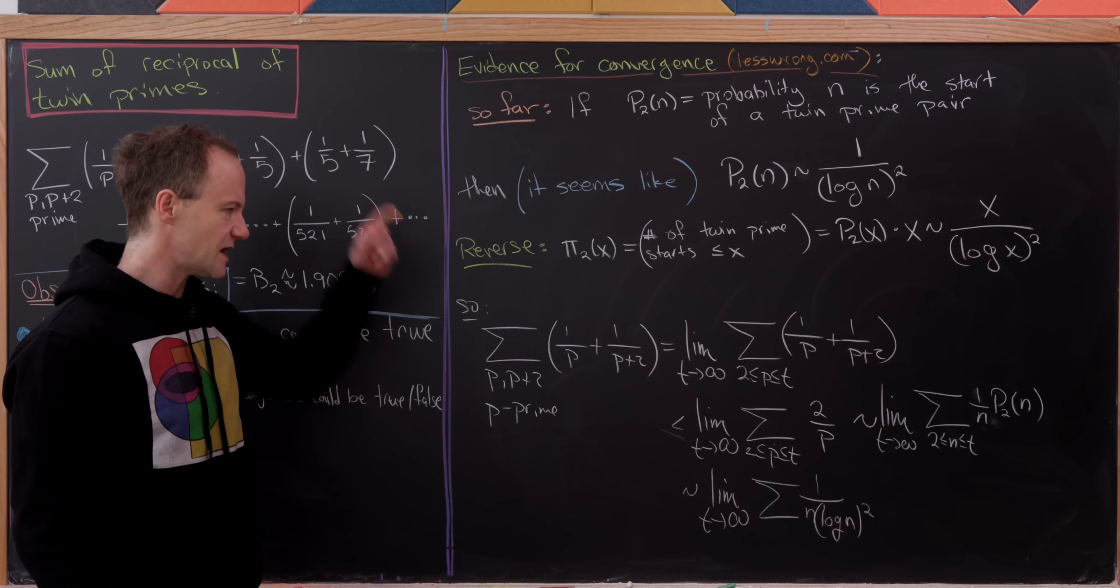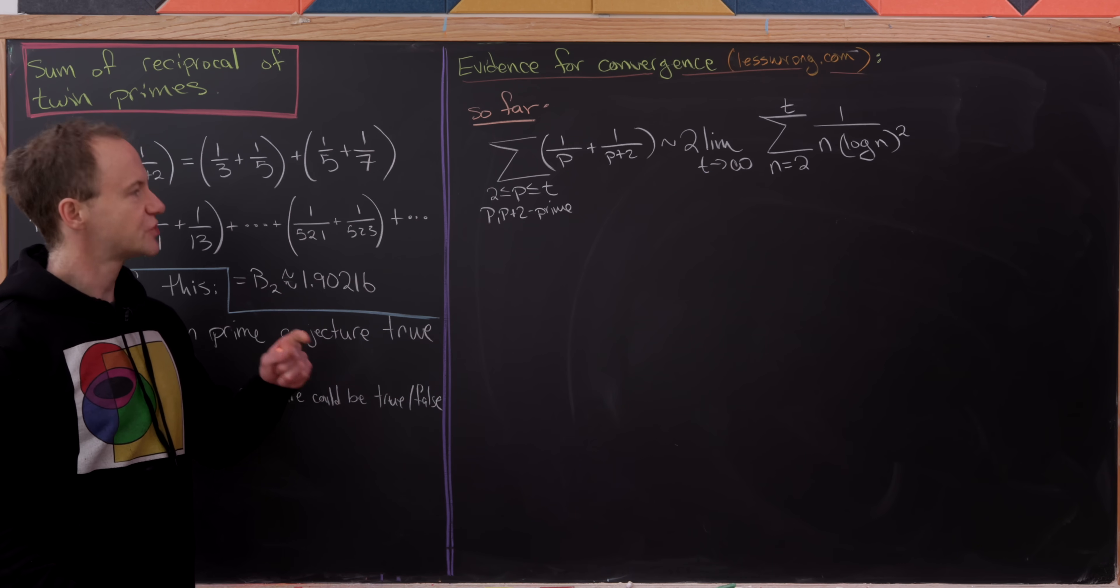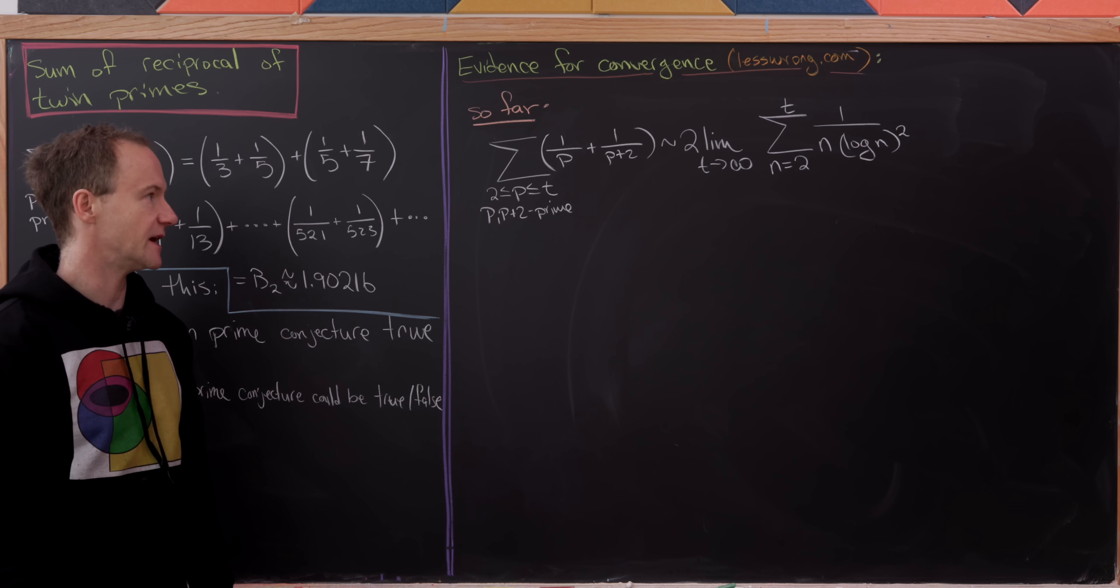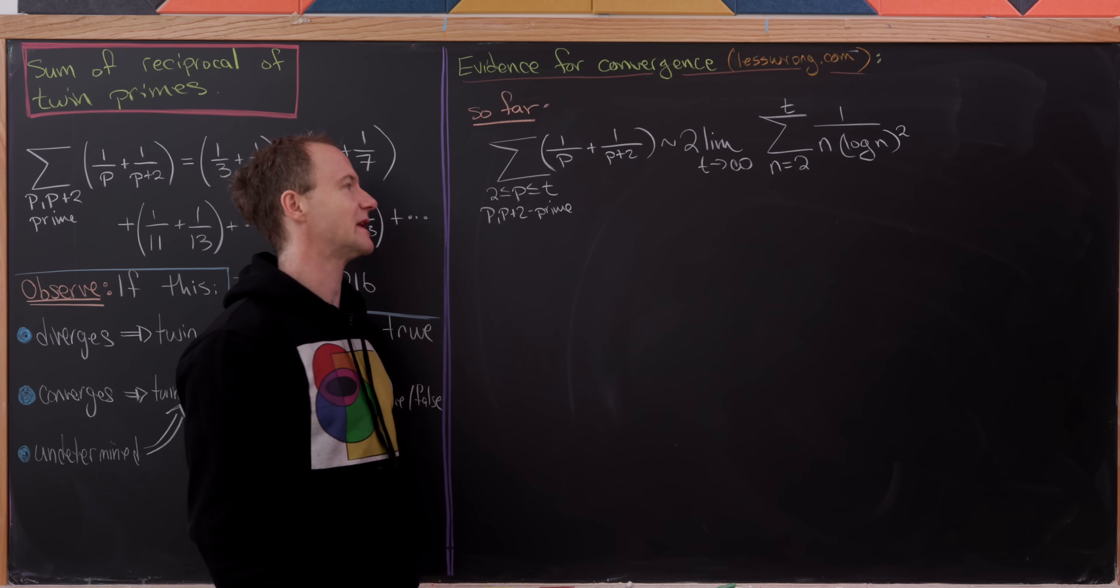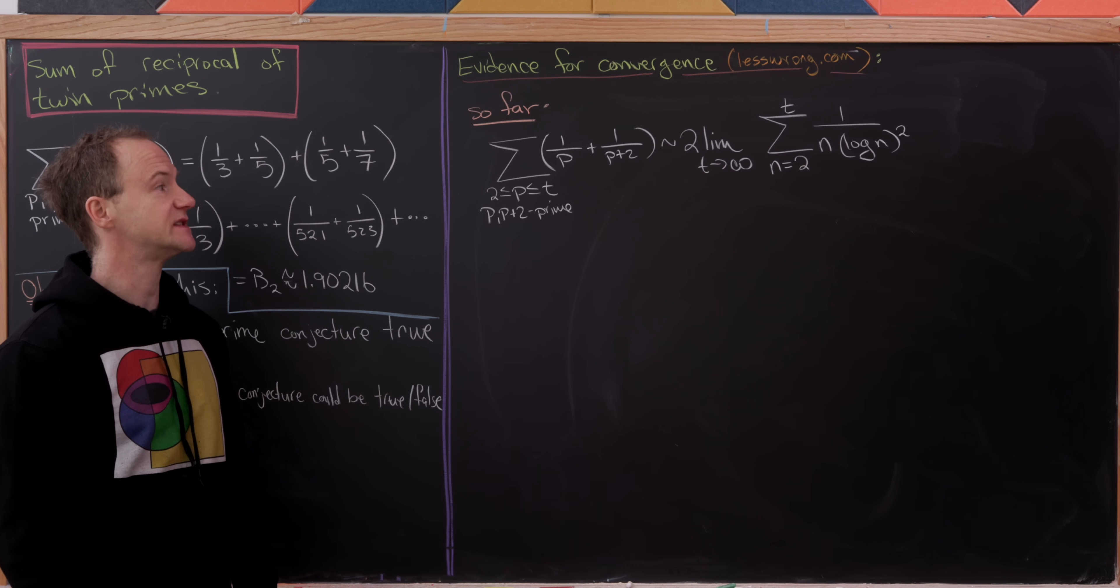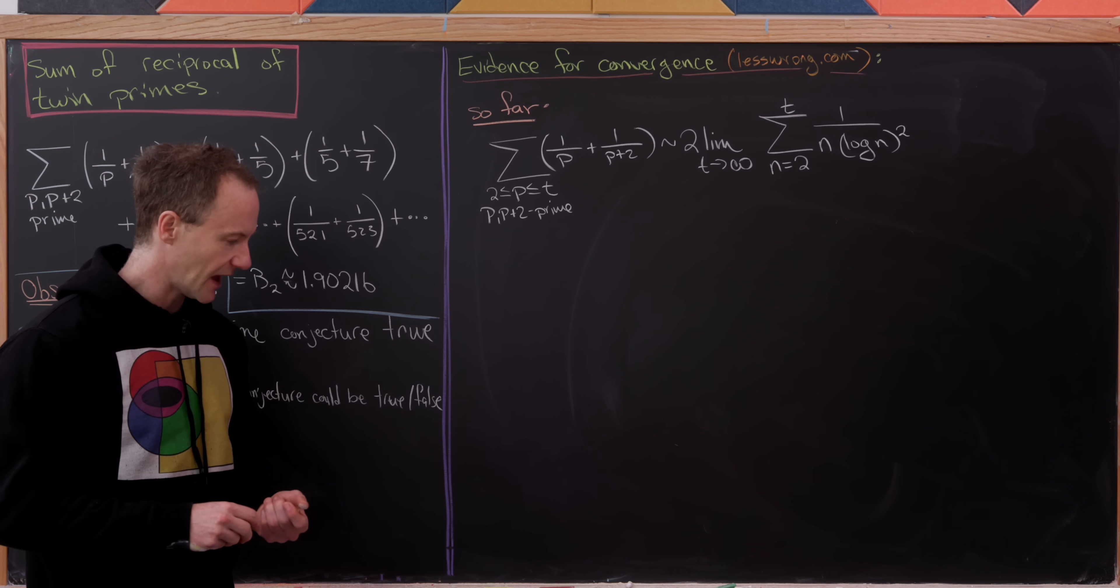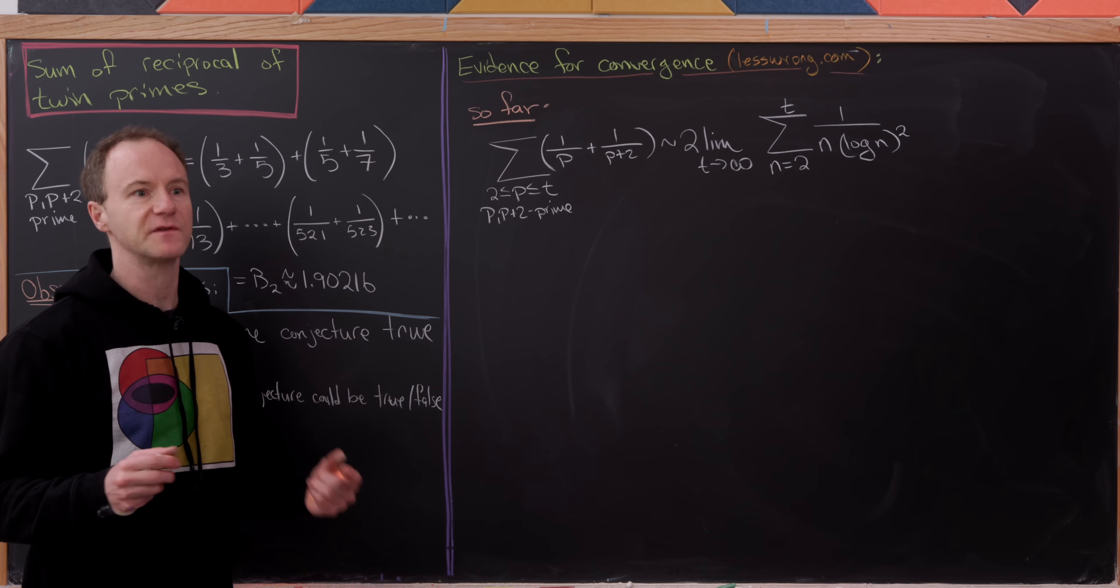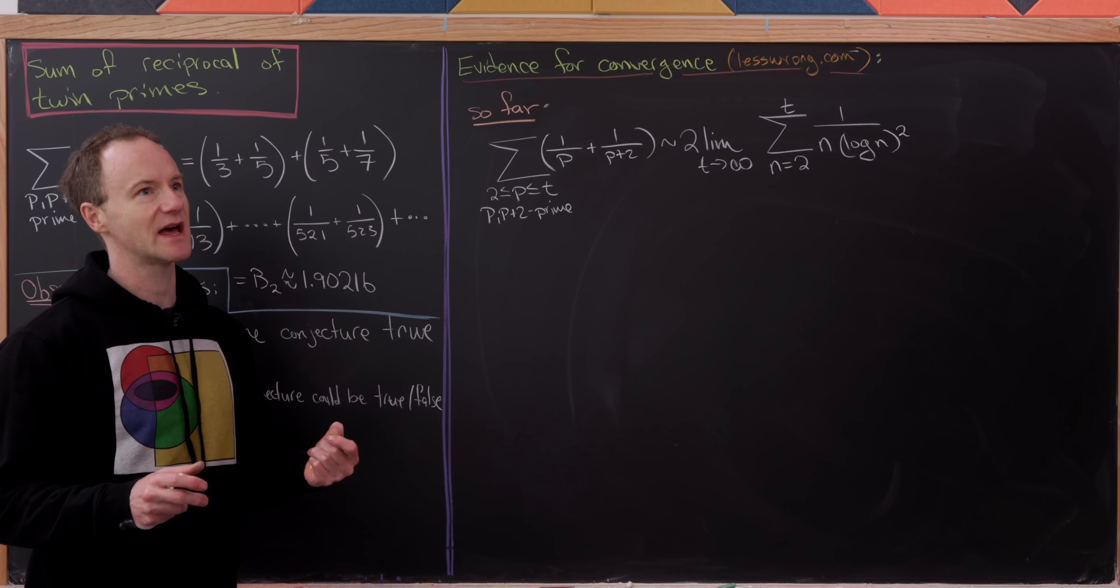So let's maybe start from this step and see if we can take it home. So so far we've shown that our series that we're interested in today grows asymptotically similar to twice the limit as t goes to infinity of the sum as n goes from 2 to t of 1 over n times log n squared. And you know, like I've said before, this is not a careful proof. This is just an argument for truth.